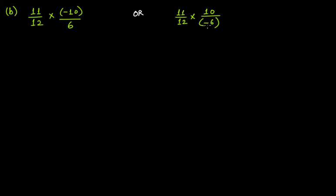If you remember when we were discussing subtraction and addition of two rational numbers, we learned that if denominators have a negative sign then we first remove the negative sign from the denominators. But in the case of multiplication and division we don't follow that step.